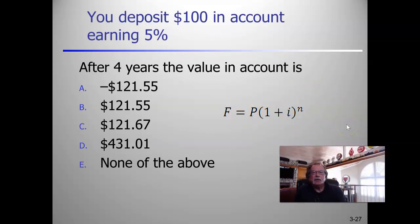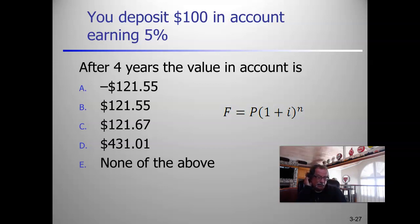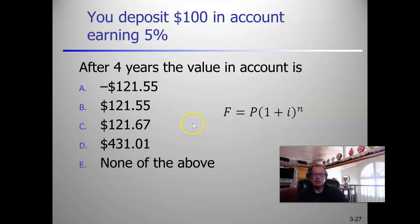If you deposit $1,100 in an account earning 5%, after four years what would the value of the account be? You can rule out certain answers and just pop it into the formula: P times (1 plus 0.05) to the fourth. That narrows it down to one of two specific numbers.